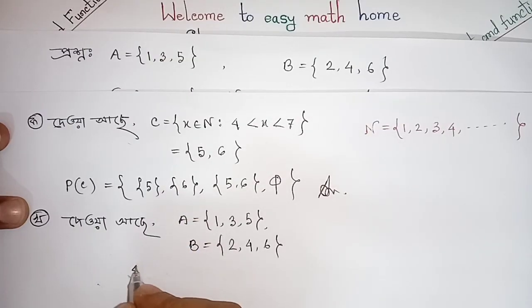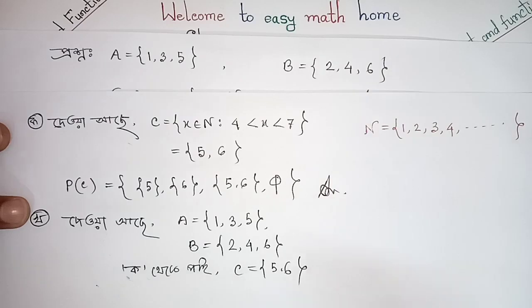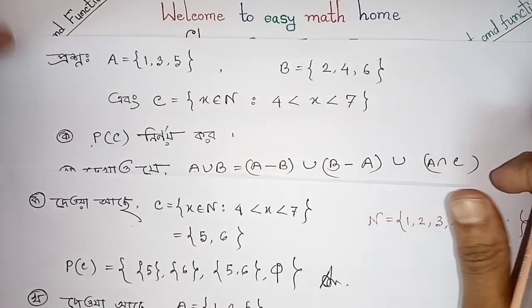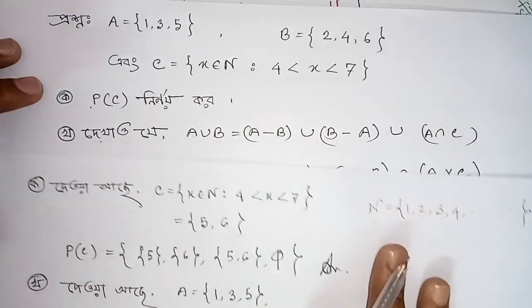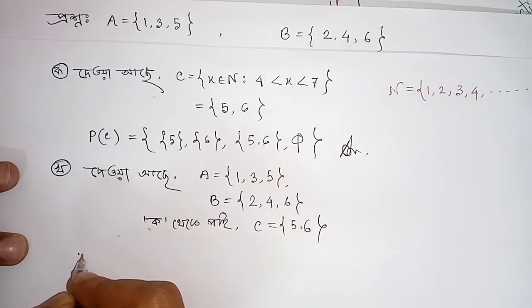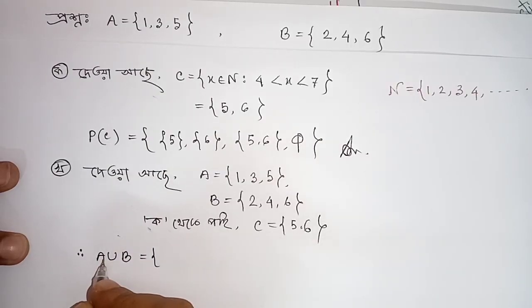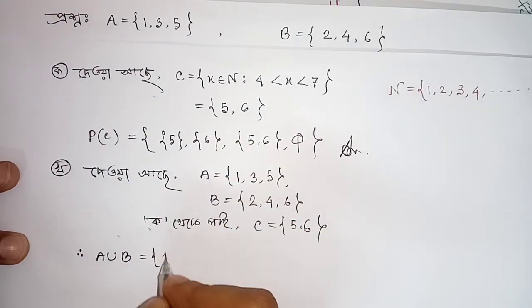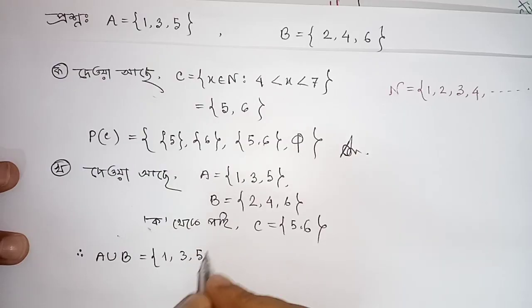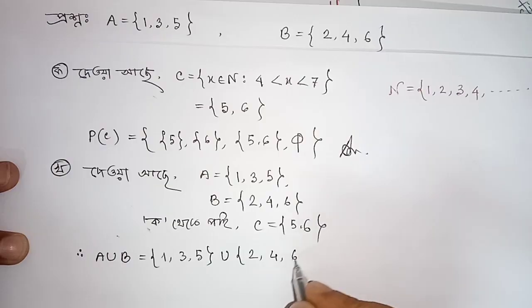From 5 to 6, okay. So A union B — the value of A is {1,3,5}, union B's value is {2,4,6}.